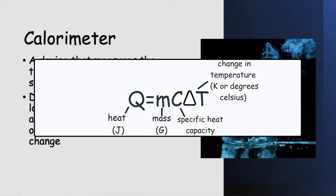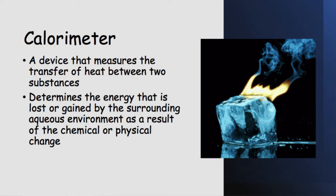Using the data we collect today, we can use the equation Q equals MC delta T to calculate the specific heat of an object.